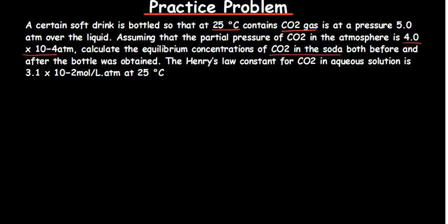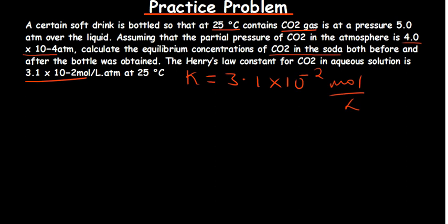The Henry's Law constant for carbon dioxide in aqueous solutions is k = 3.1 × 10⁻² mol/L·atm. The pressure inside the bottle before opening is 5 atm. After opening, the pressure comes from the atmosphere, which gives a partial pressure of 4 × 10⁻⁴ atm for carbon dioxide. Let's now determine the equilibrium concentrations.